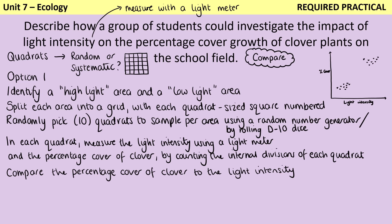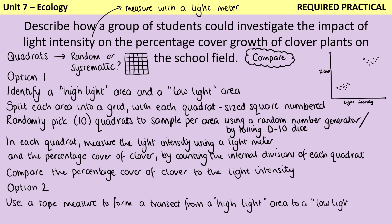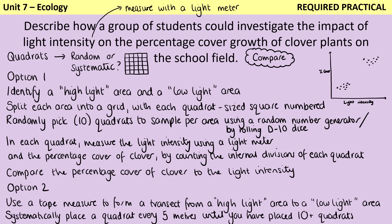Hopefully we'll end up with a graph that has light intensity on the x-axis as the independent variable and percentage cover on the y-axis. Clover likes high light areas and grows better there, so in the higher light environment we saw more percentage cover. The alternative would be systematic transect sampling — using a tape measure to form a transect from the high light area to the low light area, systematically placing a quadrat every five or ten metres until we have at least ten quadrats. When analysing this data, rather than having two different areas on the graph, we would have a gradual transition from low light to high light.